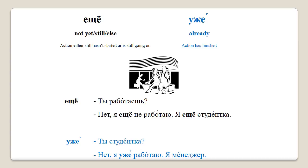Let's see how we can use them in conversation. First dialogue: Ты работаешь? Нет, я ещё не работаю. Я ещё студентка. You can see that ЕЩЁ is used here twice with different meanings. In the first phrase, 'я ещё не работаю' describes an action that hasn't yet started. In the second phrase, 'я ещё студентка,' it describes an action that is still going on. Translation: 'Do you work?' 'No, I'm not working yet. I am still a student.'